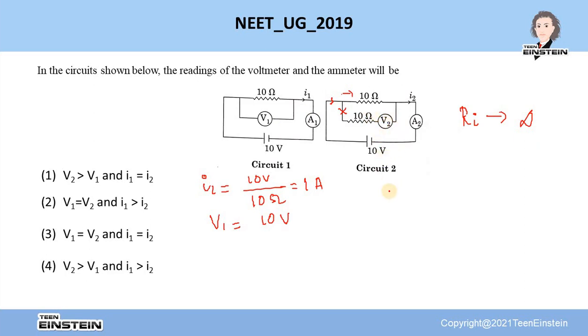Therefore, here also, the current reading will be I2 is equal to 1 ampere and V2 will be 10 volt.